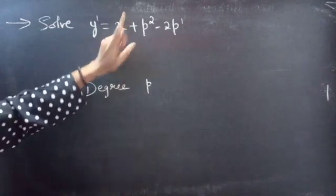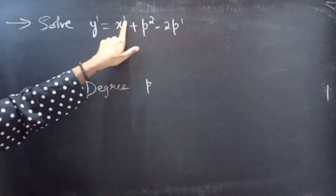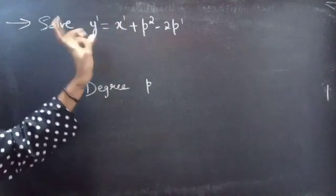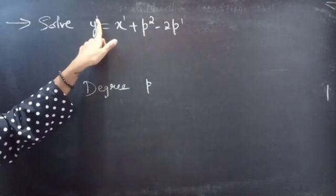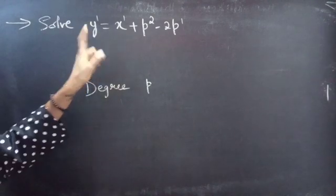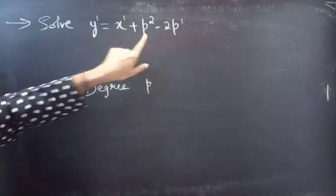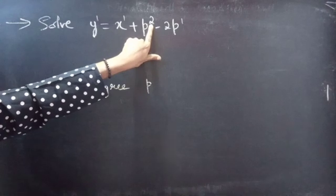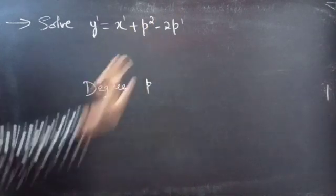Since we have x to the power 1 and no other x with power higher than 1, and y to the power 1 with no other y raised to a power greater than 1, we call this equation first degree in y or first degree in x. And p has the highest power 2, so this is second degree in p.